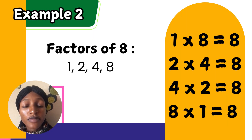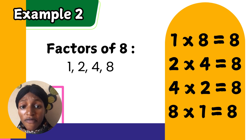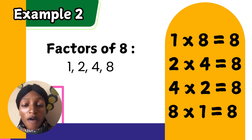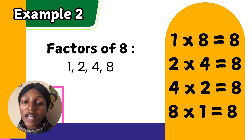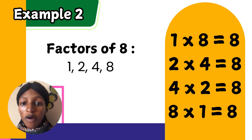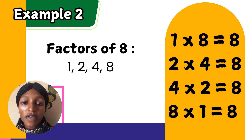Example 2: the factors of 8. What numbers can you multiply together to give you 8? We have 1 times 8, which gives you 8. 2 times 4 will give you 8. 4 times 2 will give you 8. And 8 times 1 will give you 8. Look at the numbers multiplied together to give you 8 — these numbers are the factors of 8: 1, 2, 4, and 8. They are the factors of 8.